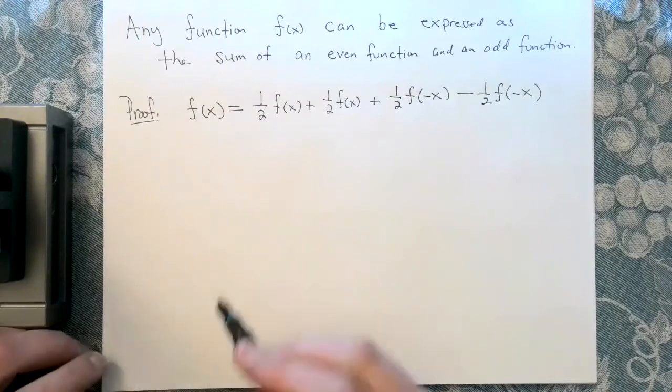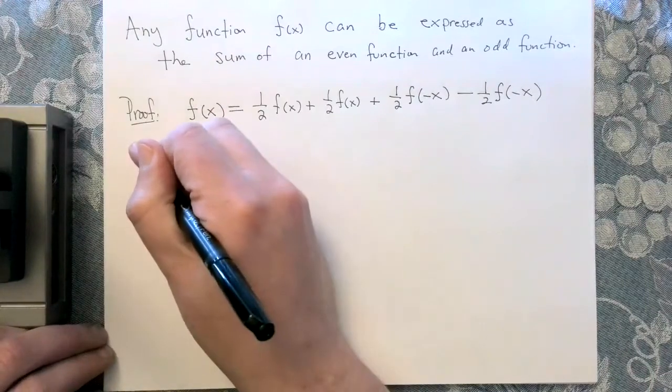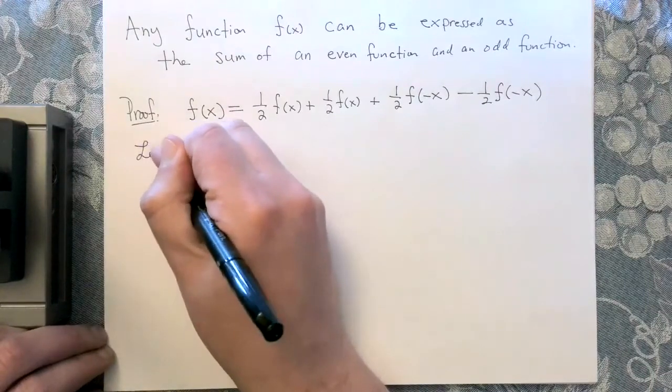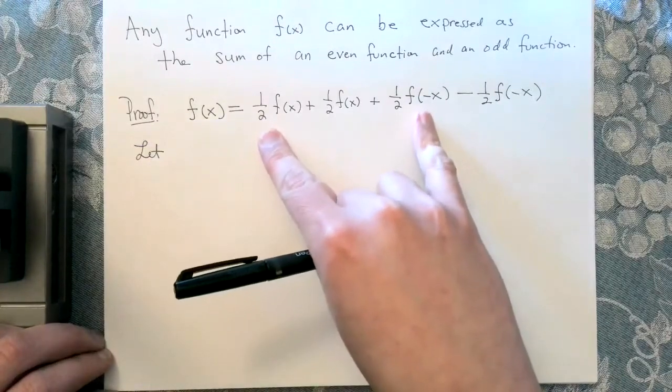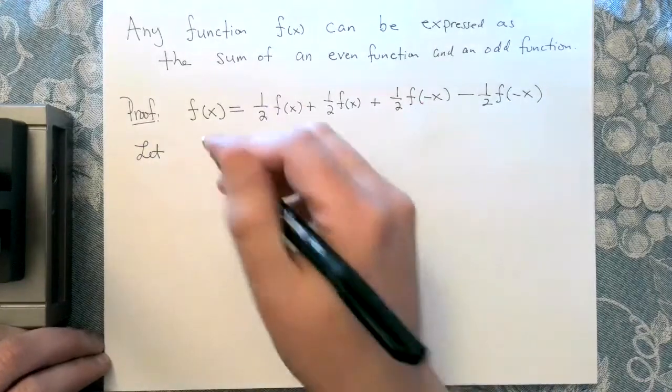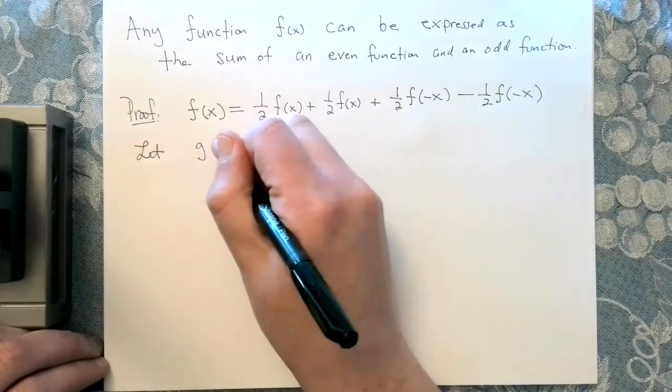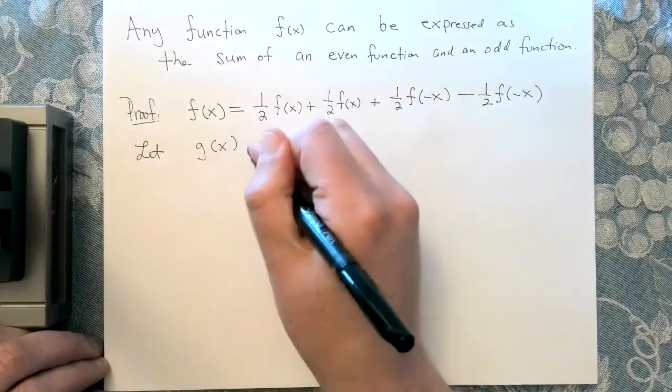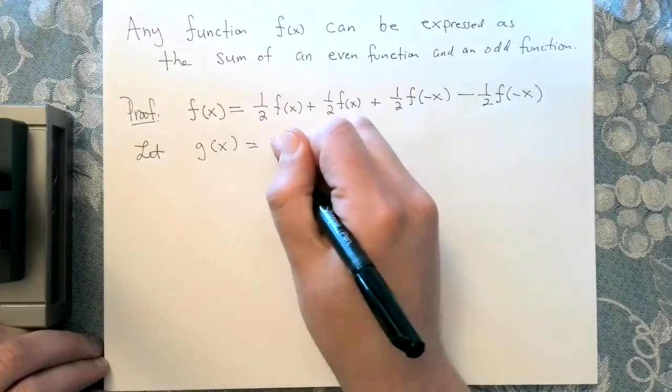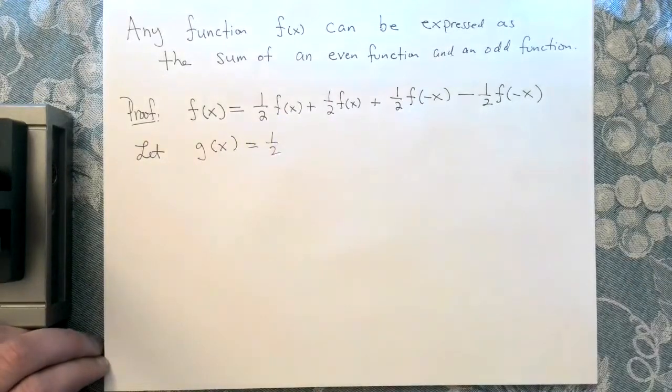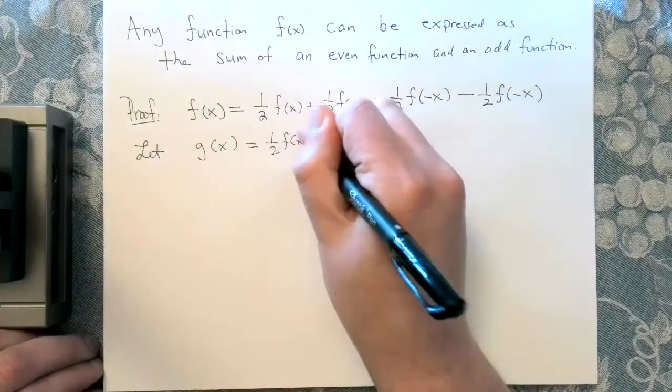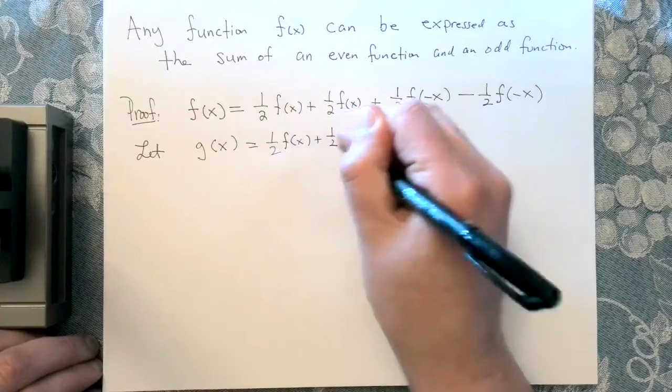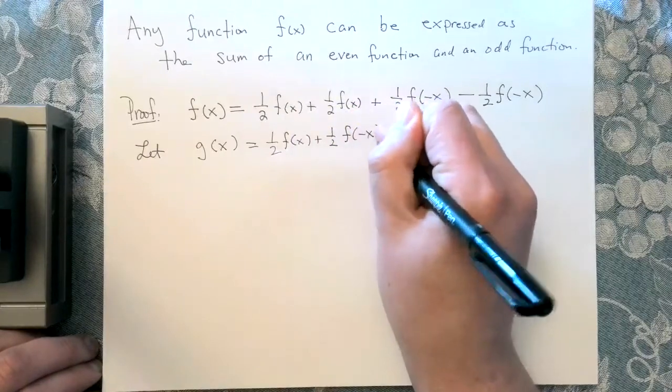Now what we want to do is give certain parts a name. These two terms right here, we're going to call g(x). So g(x) is exactly one half f(x) plus one half f(-x).